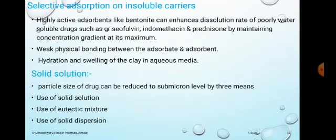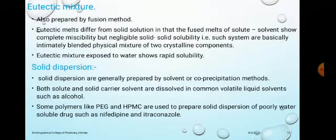The particle size of drugs can be reduced to submicron level by three means: solid solution, eutectic mixture, and solid dispersion. Eutectic mixtures can be prepared by the fusion method. They differ from solid solutions in that the fused melt shows complete miscibility but negligible solid-solid solubility — such systems are basically intimately blended mixtures of two crystalline components. When a eutectic mixture is exposed to water, it shows rapid solubility. Solid dispersions are generally prepared by the solvent or co-precipitation method.